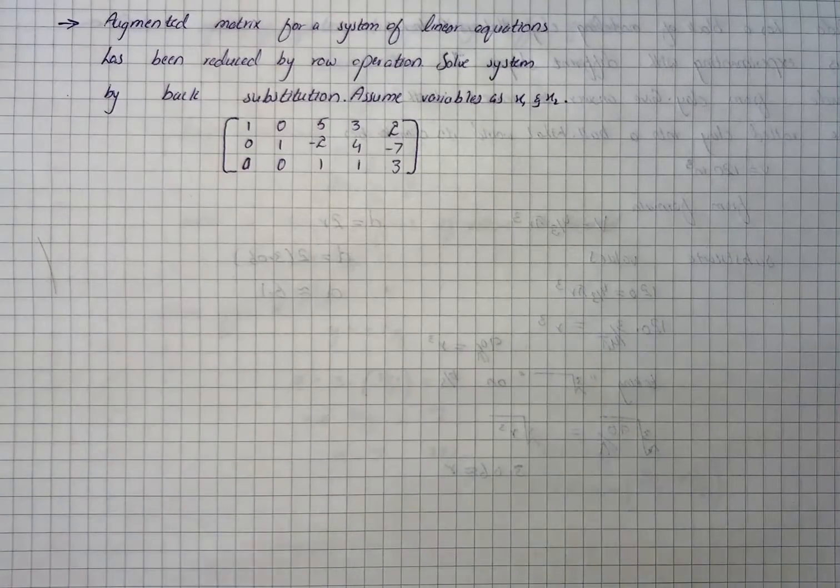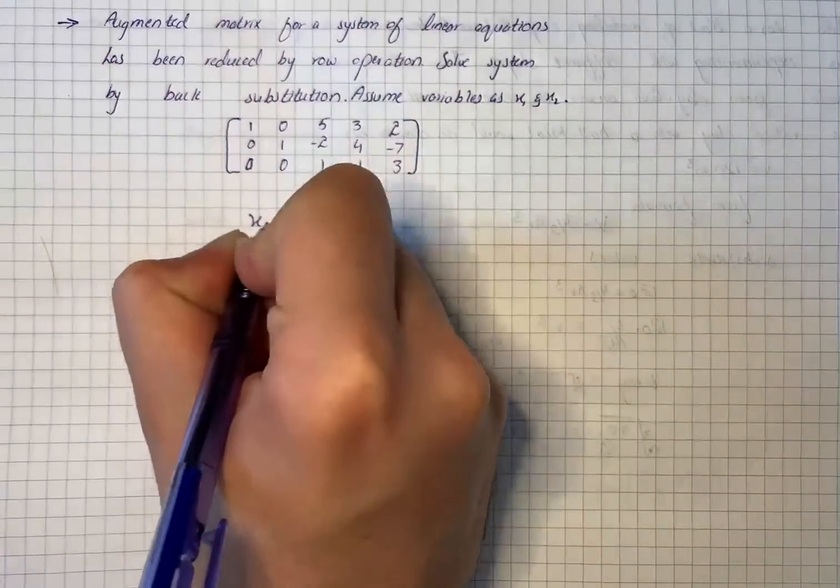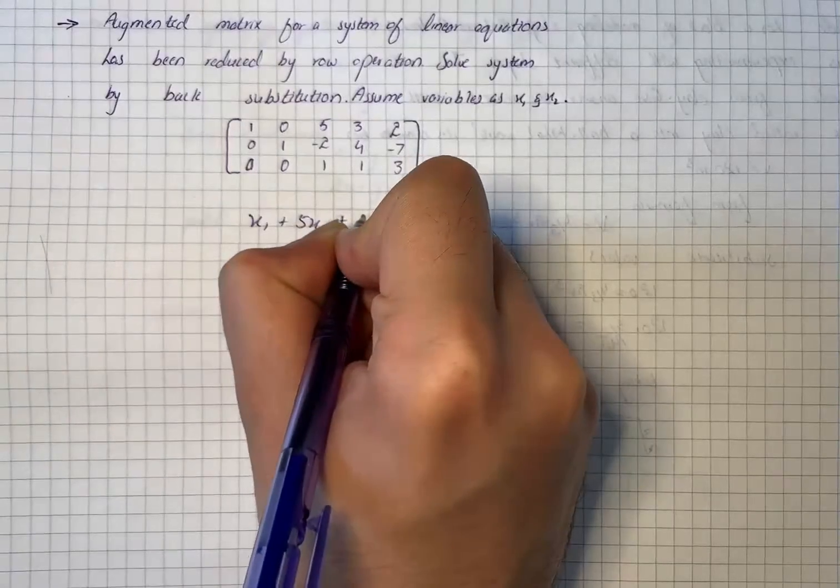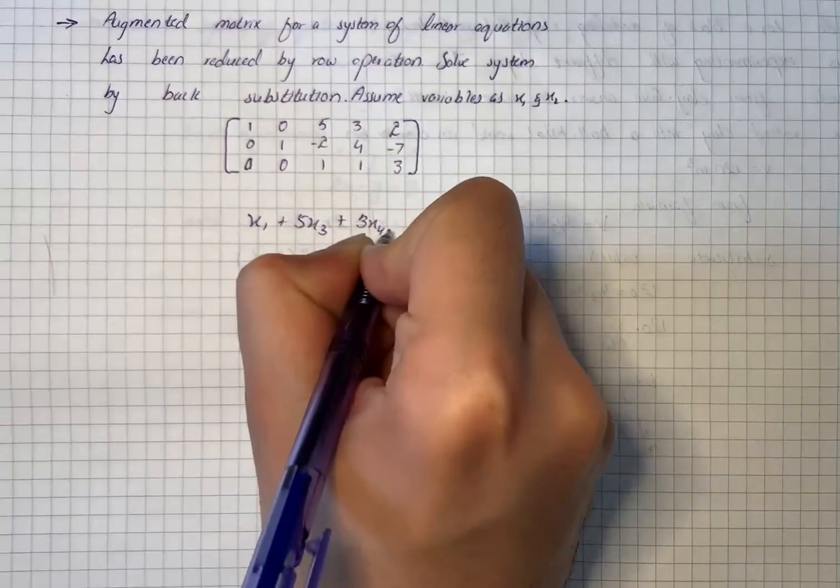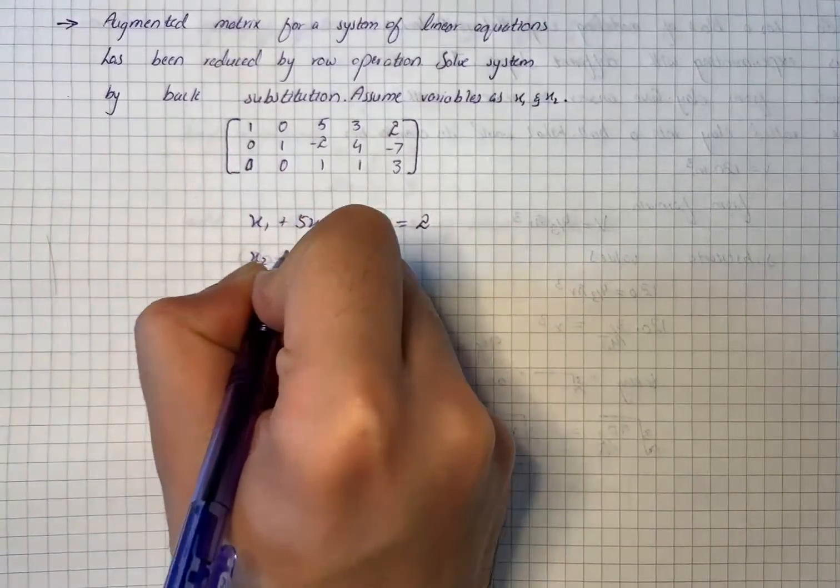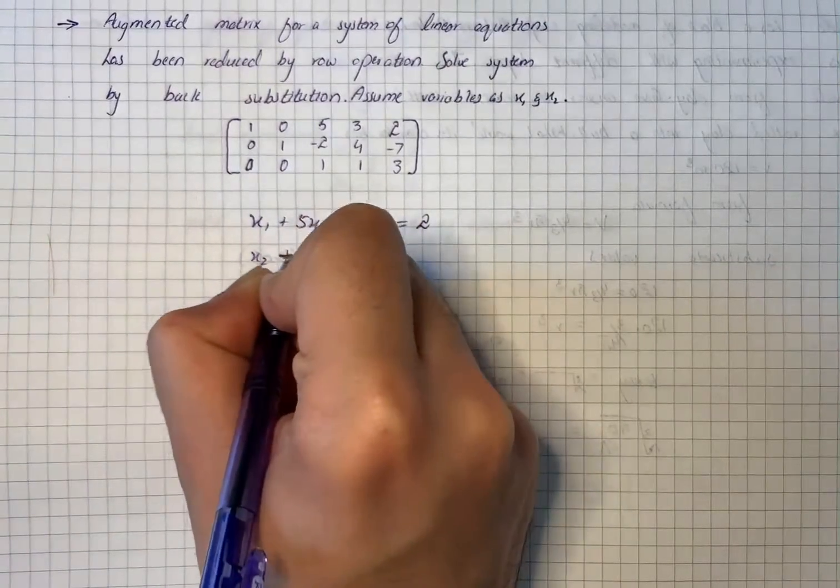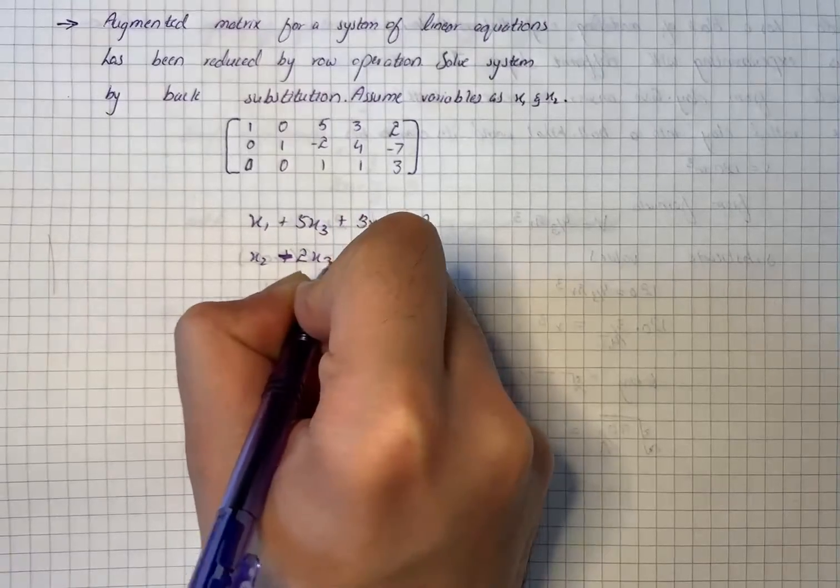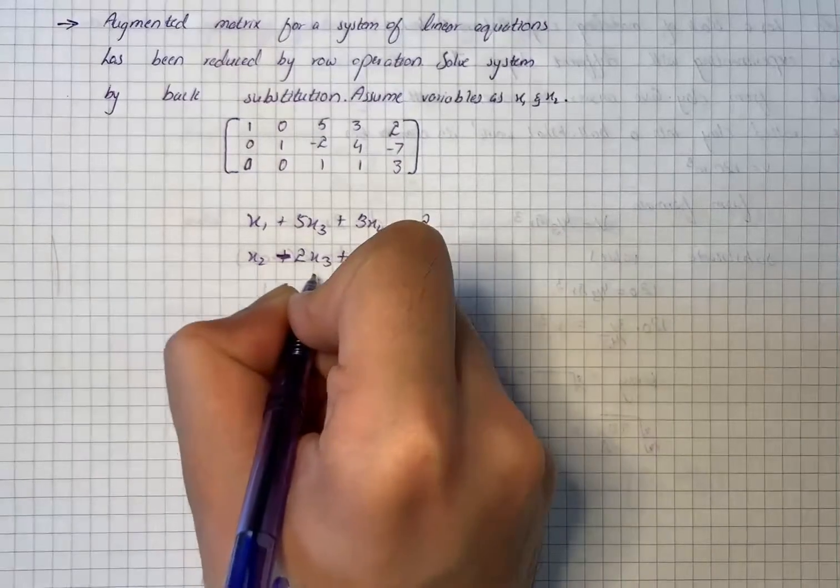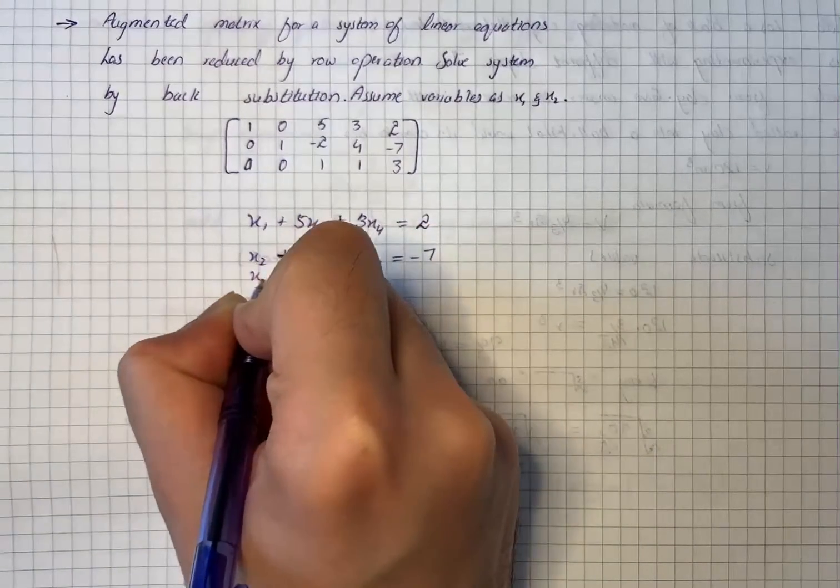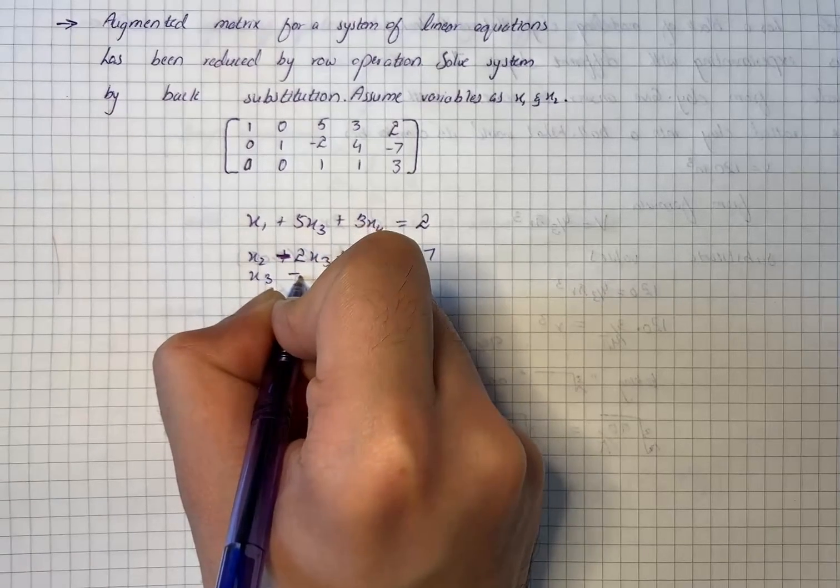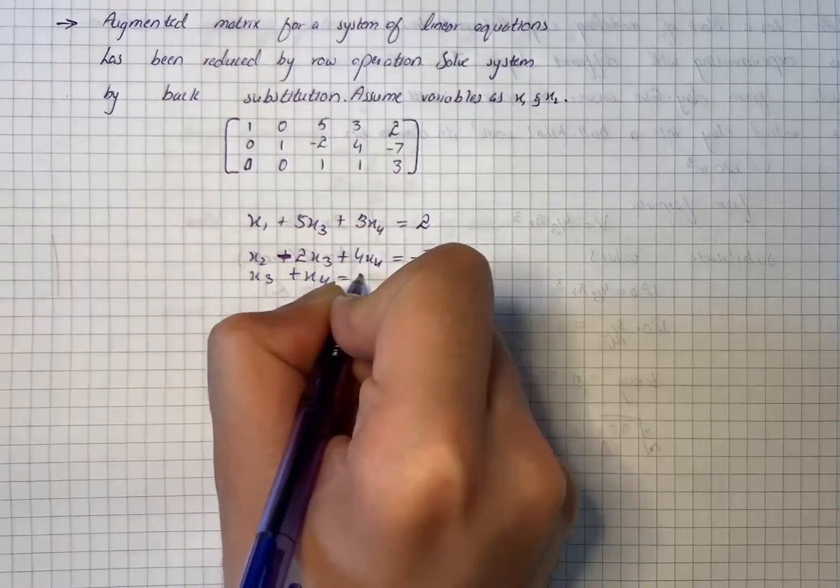First of all, the linear system corresponding to the augmented matrix will be x1 plus 5x3 plus 3x4 equals 2, and then we have x2 minus 2x3 plus 4x4 equals minus 7, and then we have x3 plus x4 equals 3.